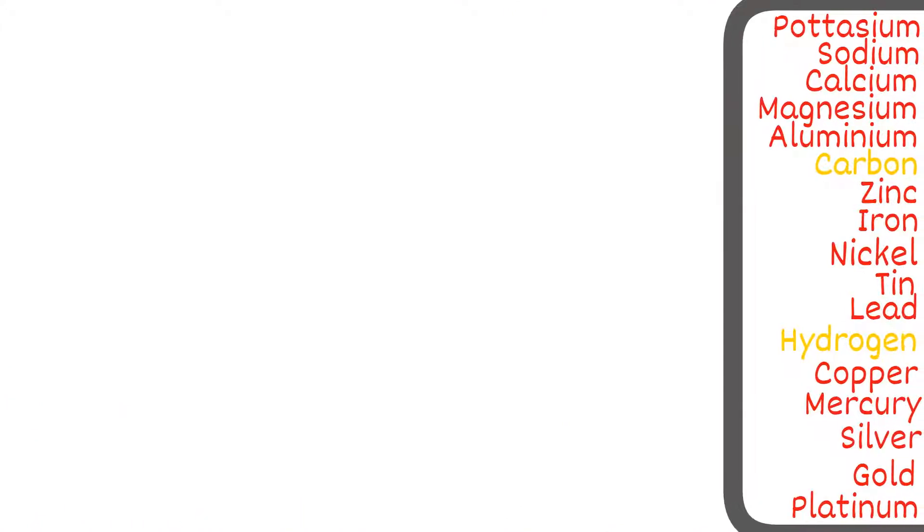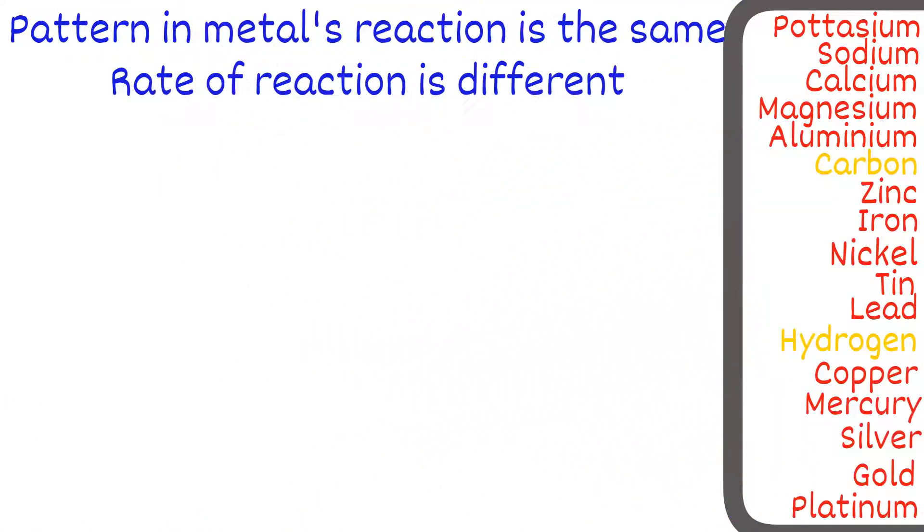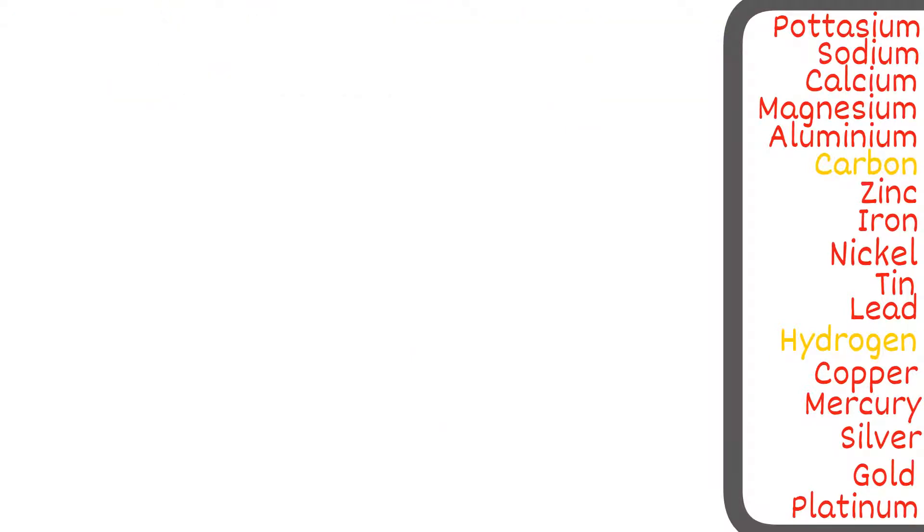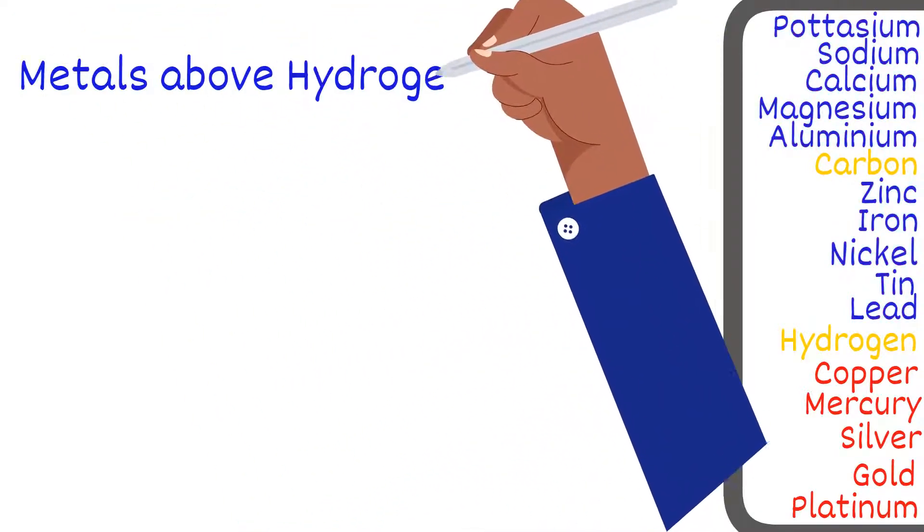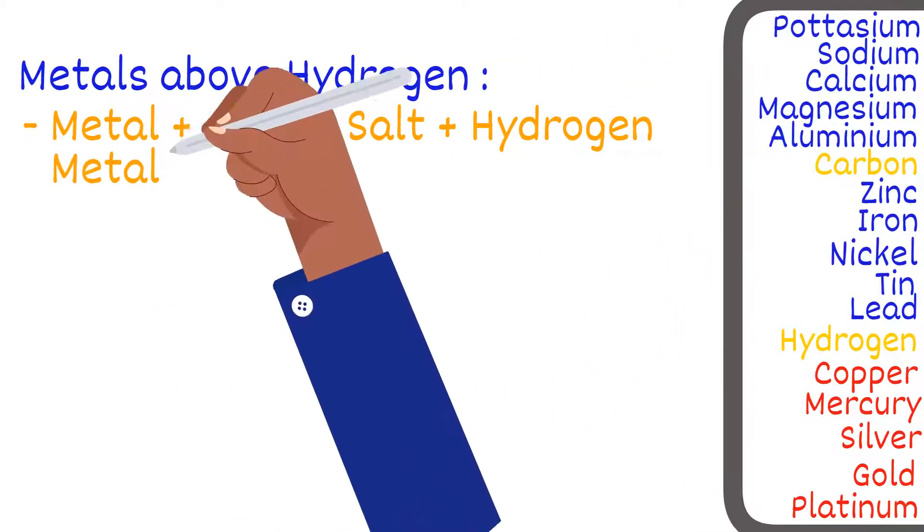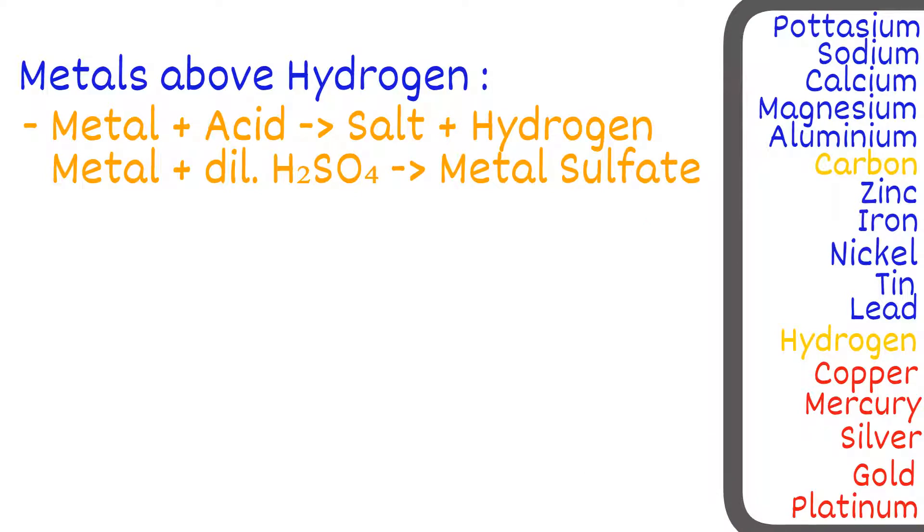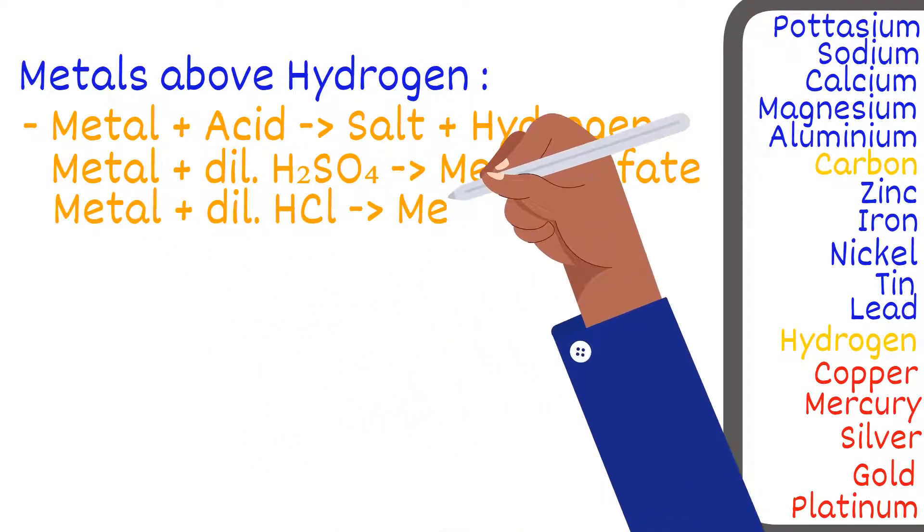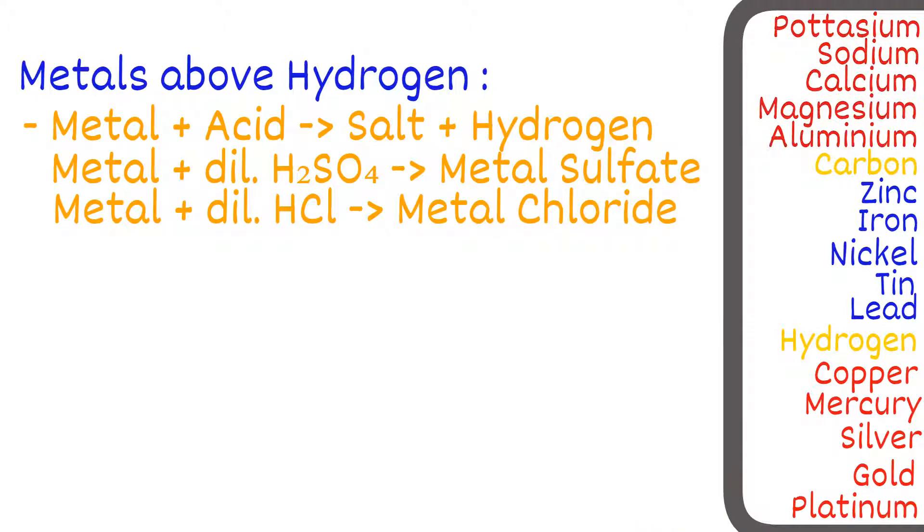The pattern in the metals' reactions with acid is the same, but the rate of their reaction will differ. For metals above hydrogen, metal plus acid would result in salt and hydrogen. So for metal plus dilute sulfuric acid, the salt would be metal sulfate, and for metal plus dilute hydrochloric acid, the salt would be metal chloride.